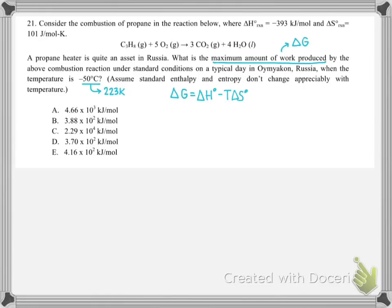In problem number 21, we have a combustion reaction — that's evident because we have a hydrocarbon reacting with oxygen to make CO₂ and water. They give us the delta H, which is negative, making sense for combustion, and also the value for the entropy. They want us to figure out how much work can be done at a given temperature, and when they ask for work produced, they're asking for delta G.